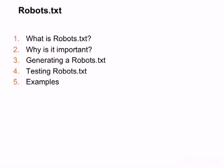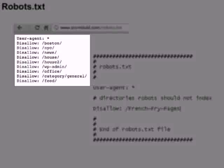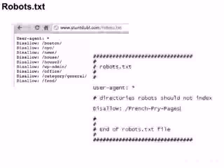Starting with robots.txt — what is it? We've talked a little bit about why it's important. We're going to look at how to generate and test that robots.txt so that we can prevent duplicate content. Robots.txt is just a simple file at the beginning of a website. It's one of the first files that the search spider will hit to see what it can read and what it cannot — so we can block files here.